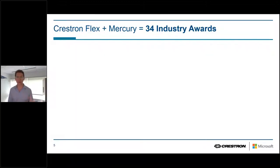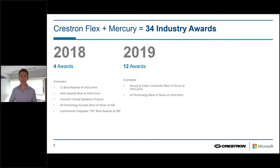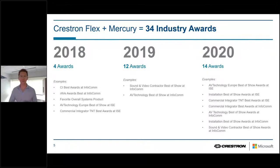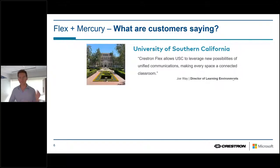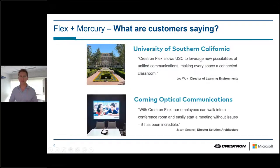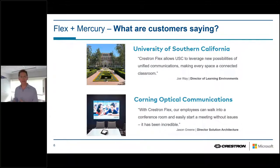Since the release back in 2018, we have received 34 industry awards — most in the market for any tabletop conferencing solution. We've also received incredible customer responses from the university campus up to the enterprise conference room, with partners such as USC and Corning, and of course Rich Products joining here today. From the enterprise to the campus classroom, Mercury has always allowed us to meet naturally and effectively — everyone is heard, everyone is seen, and we're collaborating effortlessly and naturally around the device.